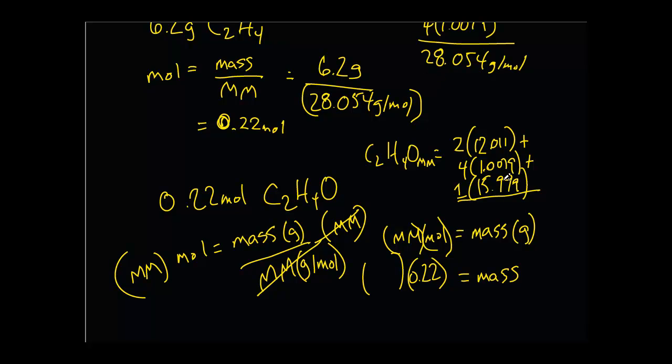Well, I know it's 28.054 plus 15.999, but just to double check my work, I'll multiply it out again. 24.022 for carbon and I'm going to tack on the 15.999 and I get 44.0526, which is 44.053.